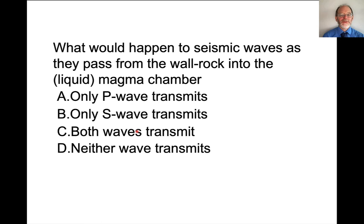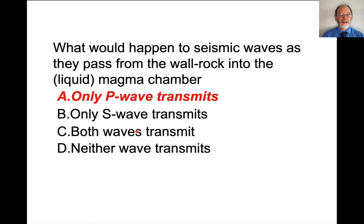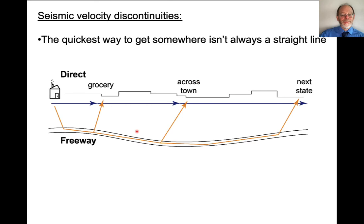Here's a question: what would happen to seismic waves if they passed from wall rock into a liquid magma chamber? The answer is only the P wave transmits. Liquids cannot sustain shear stresses, so the S wave cannot transmit through a liquid magma chamber. Because the P wave depends also on the bulk modulus, it will transmit — it will not have the same velocity, but it will transmit.